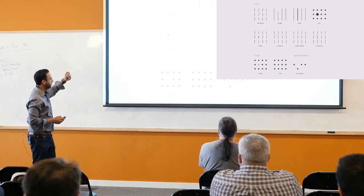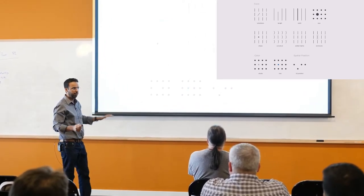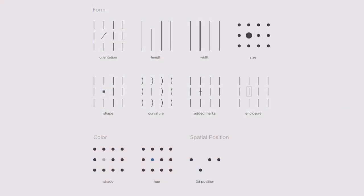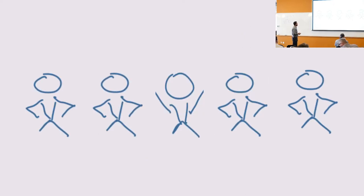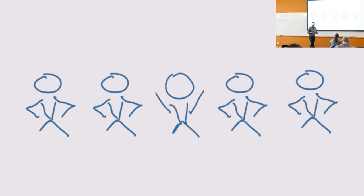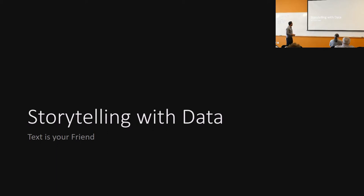These are what we call pre-attentive attributes, and they could be in different forms — orientation, length, width, size, shape, curvature, marks, enclosures, color, hue. We looked into one aspect: hue — you change the color and immediately your focus went to that particular piece. And as humans, we love the odd balls. We want to figure out what is odd, what is different. Another aspect of storytelling with data is that text is your friend. Let me do another demo for that.